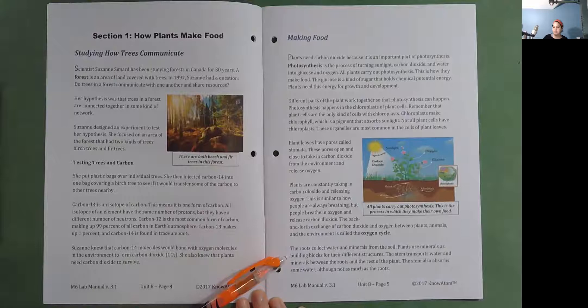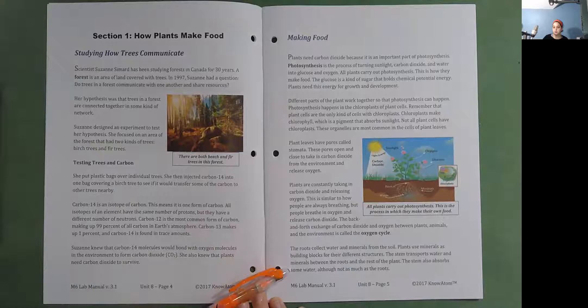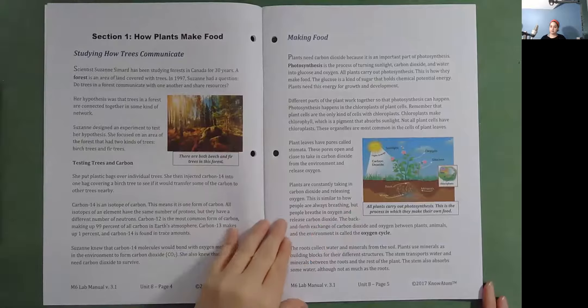Plants are constantly taking in carbon dioxide and releasing oxygen. This is similar to how people are always breathing, but people breathe in oxygen and release carbon dioxide. The back and forth exchange of carbon dioxide and oxygen between plants, animals, and the environment is called the oxygen cycle. The roots collect water and minerals from the soil. Plants use minerals as building blocks for their different structures. The stem transports water and minerals between the roots and the rest of the plant. All plants carry out photosynthesis. This is the process in which they make their own food.